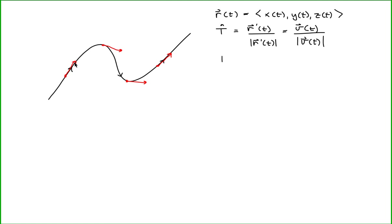Another thing to remember is that the magnitude of a unit vector is constant — its value is equal to exactly one. So each of these unit vectors at various points have the same magnitude, even though they point in different directions. The only thing that's changing about these unit vectors is the direction, not their magnitude.